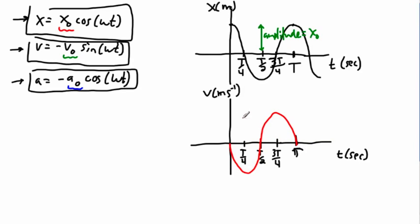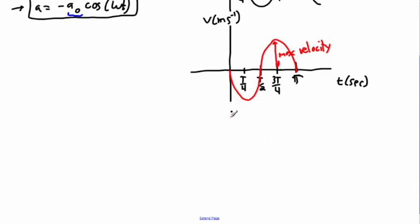That would be sort of one complete period of a minus sine graph, where this right here would be the max velocity or the maximum speed. That would be your amplitude of this graph. And finally, if I wanted to do the acceleration.